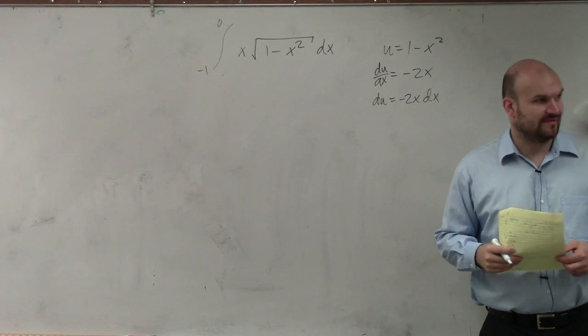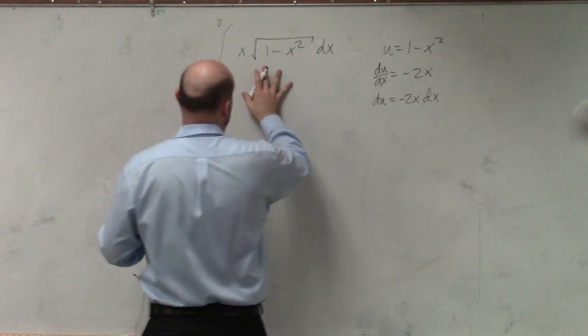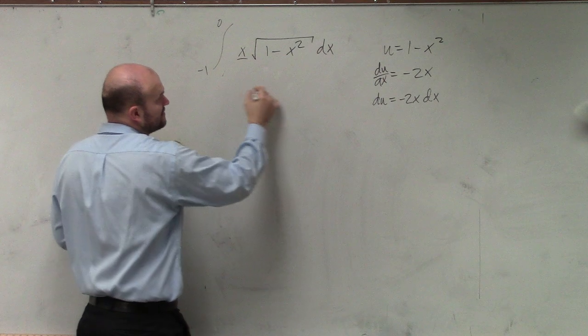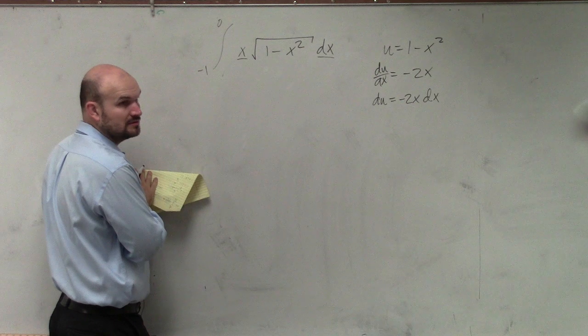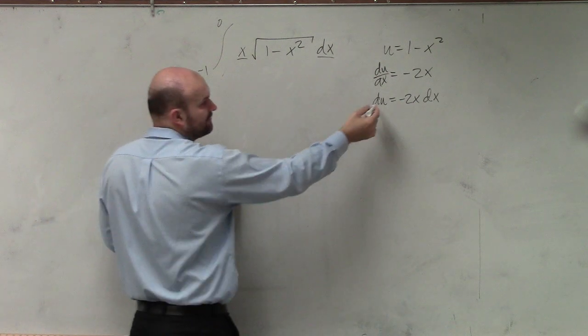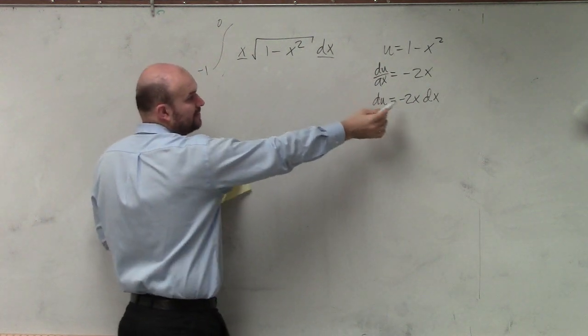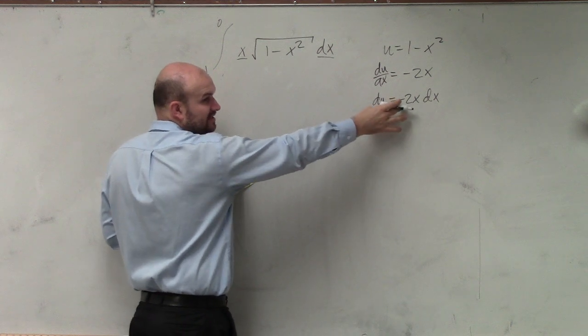But we all know that we have an issue here. Because if we were going to look at this function, we have an x, we have the dx, but we don't have a negative 2, correct? So if we want to solve, if we have the x and the dx, we've got to get rid of this negative 2.